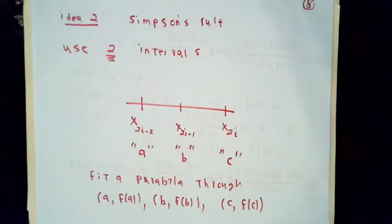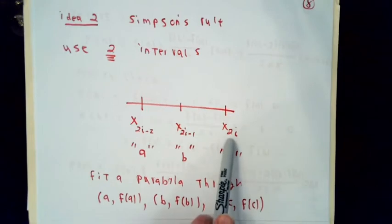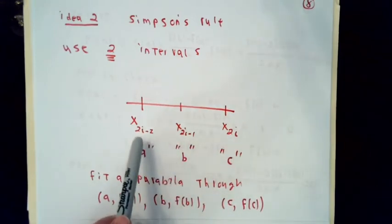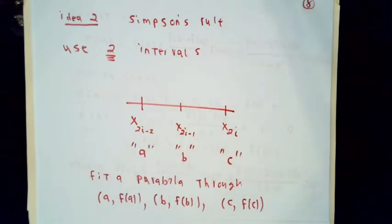The second idea that I want to look at is called Simpson's Rule. Rather than using a single sub-interval of width delta x, we'll use two of them. So I'm going to have x2i, x2i-1, and x2i-2. For convenience, for a while, I'm going to call these x values a, b, and c.